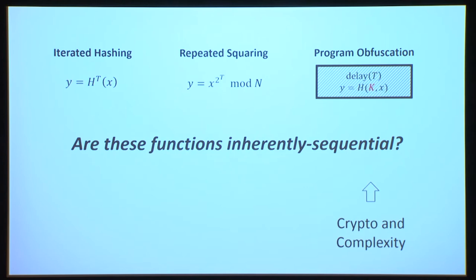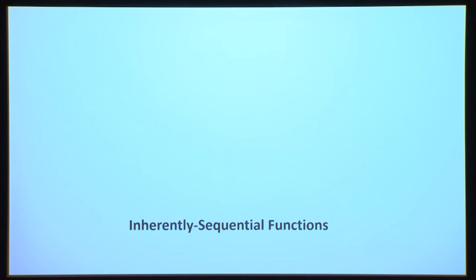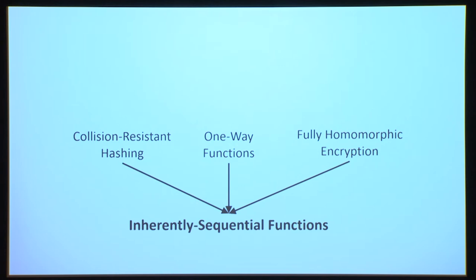The question I want to focus on for the rest of this talk is whether we can construct inherently sequential functions where the security — the sequentiality — is not just a conjecture, but can actually be proved based on well-studied cryptographic assumptions. Specifically, I'm proposing to construct an inherently sequential function based on standard cryptographic primitives, something like one-way functions, collision-resistant hashing, or even stronger objects like fully homomorphic encryption, and prove the security of this function based on the security of these underlying primitives.